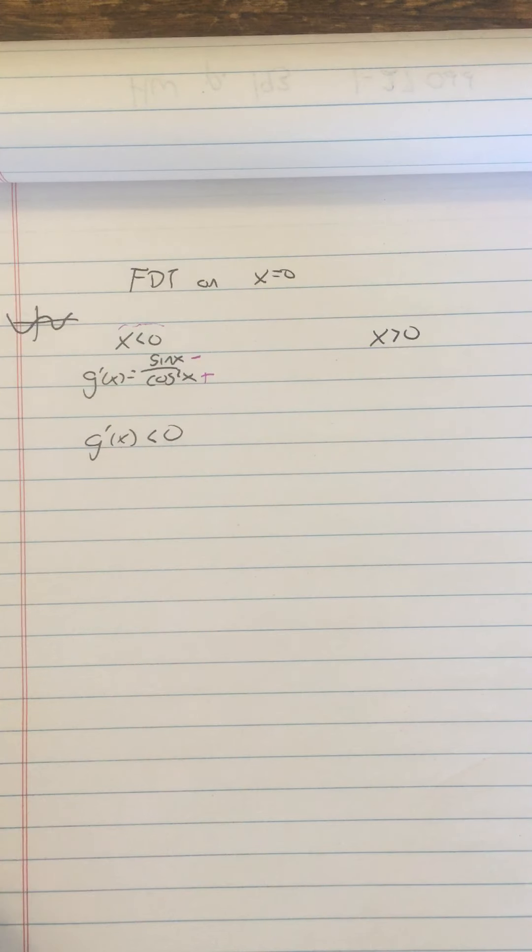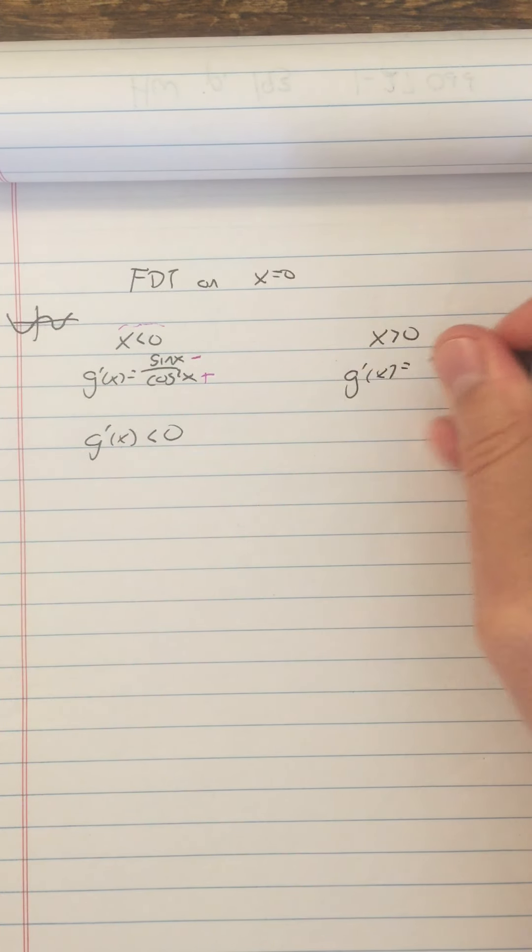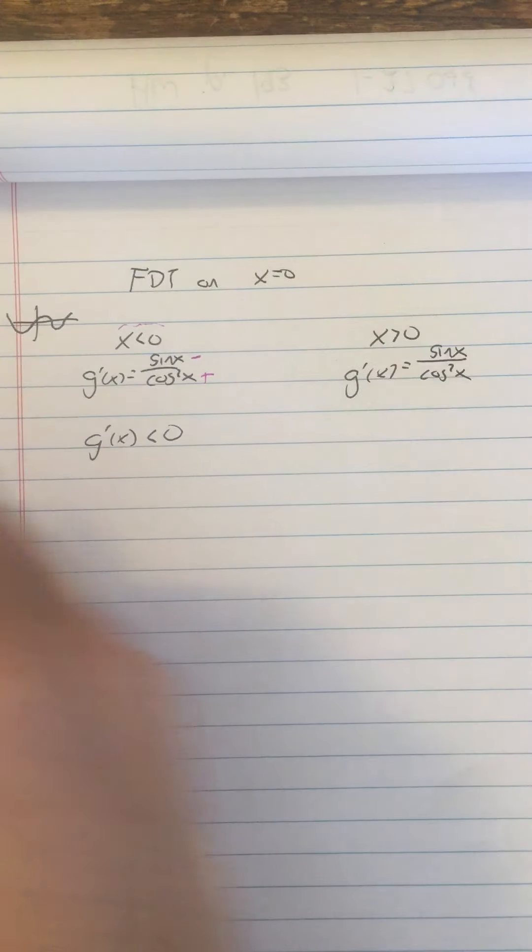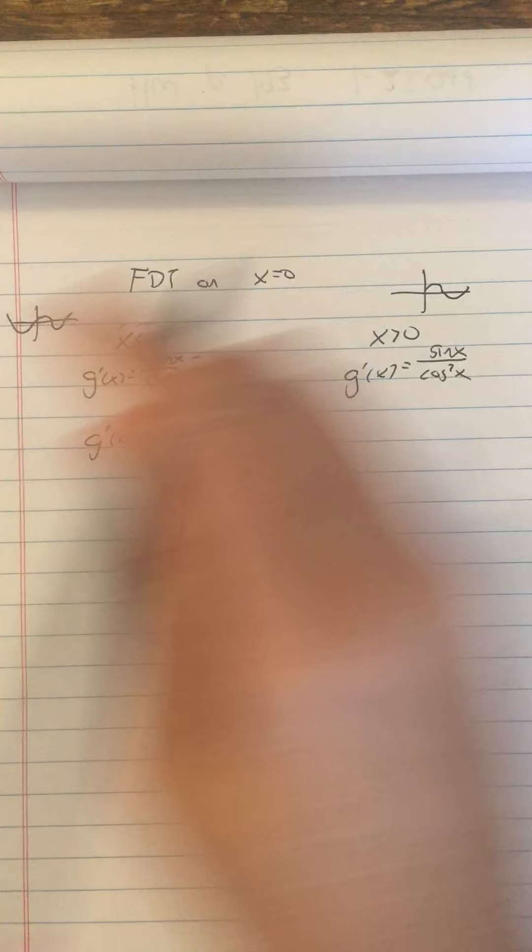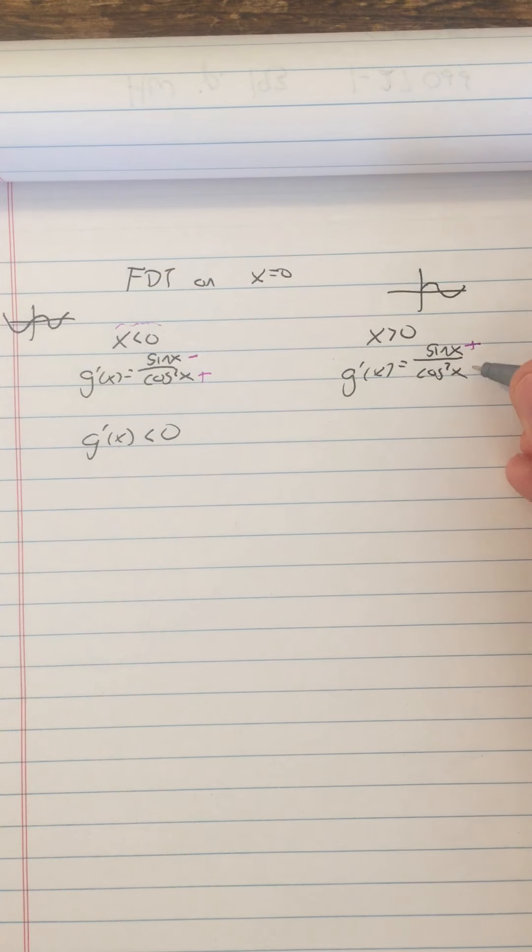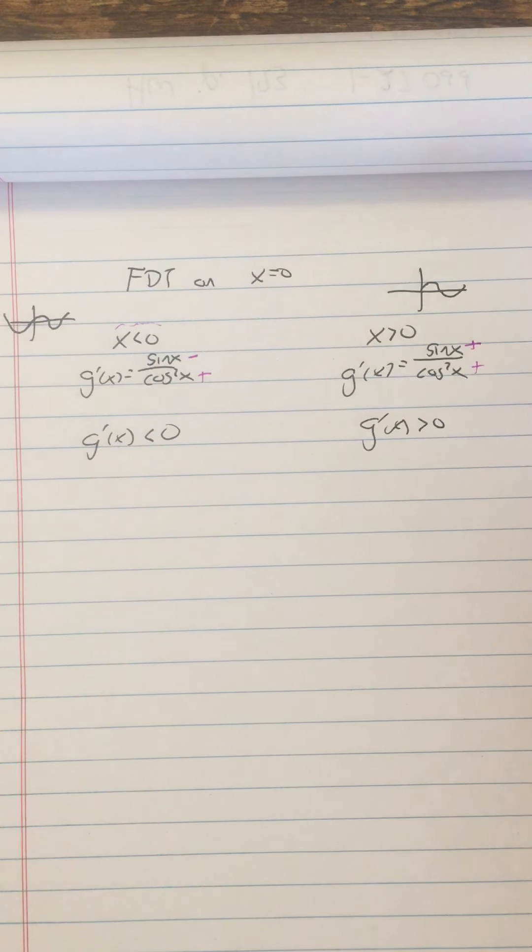What about when x is to the right of zero? Then G prime of x is still equal to sine x over cosine squared x. So now let's do a sine analysis on that. When x is slightly greater than zero, sine of x is positive. Cosine squared is always positive. So G prime of x is positive.